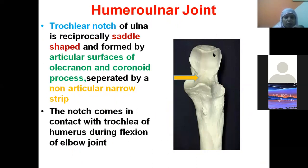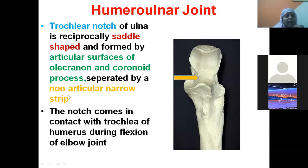The trochlear notch of the ulna is reciprocally saddle-shaped, formed by the articular surface of the olecranon process superiorly and the coronoid process inferiorly, with a non-articular narrow strip in between. This comes in contact with the trochlea during flexion of the elbow joint.